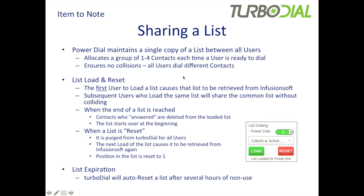For sharing a list, PowerDial maintains a single copy of a list between all users and allocates a group of contacts — one to four — each time a user is ready to dial. Some users may be dialing one at a time while others dial multiple contacts simultaneously, and that all works fine — this ensures no collisions because all users will be dialing different contacts. A list is loaded when the first user selects it; that's when it gets retrieved from Infusionsoft and loaded into TurboDial. Subsequent agents who load that same list will share the common list already retrieved, and TurboDial makes sure they don't collide.